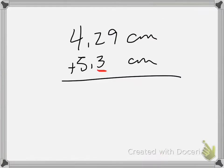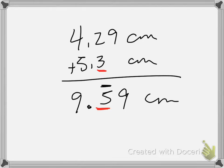Rounding: when we're adding and subtracting, because we line up the decimals, sig figs in the final answer are governed by the number with the least number of decimal places. So we would end there. 9.59 — we can only have something out to this space. Our final answer is going to be 9.6 centimeters, because we do have to round based on whatever follows.